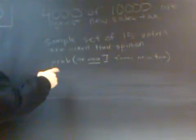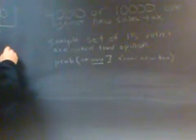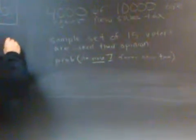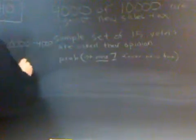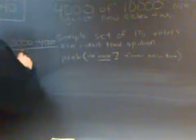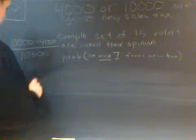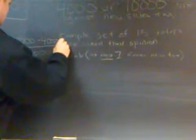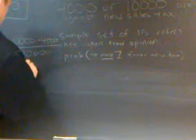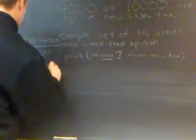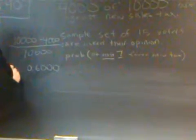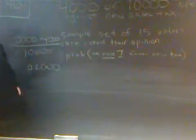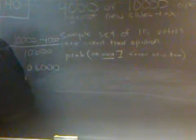And since 4,000 of 10,000 are against the new sales tax, I'm looking for the people who are in favor of the new sales tax. Next, we take 10,000 minus 4,000 over 10,000, which equals 0.6. This is the probability for favoring sales tax.